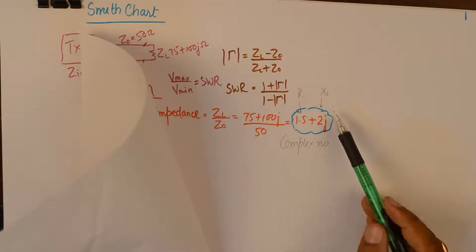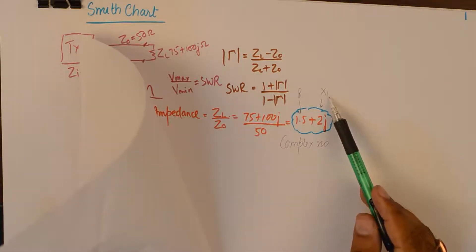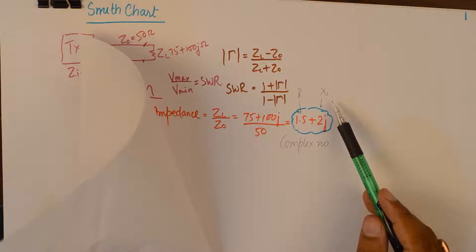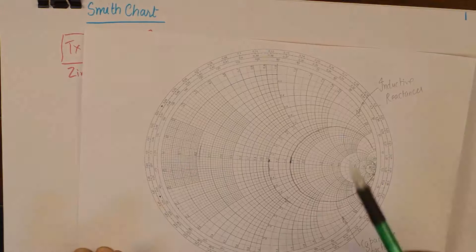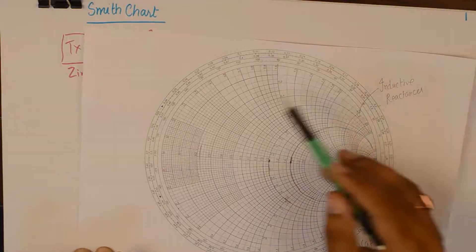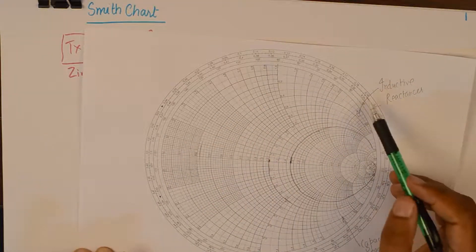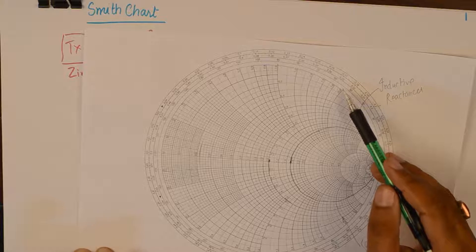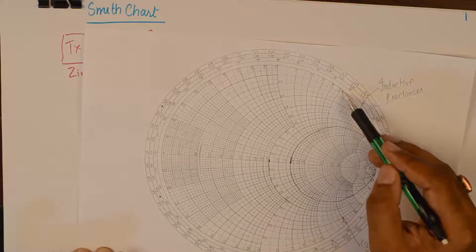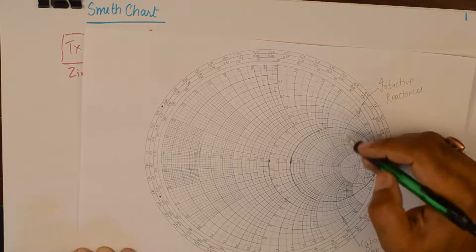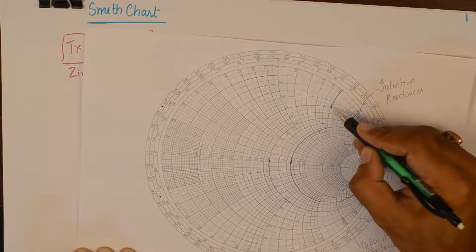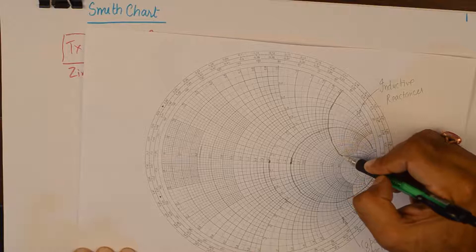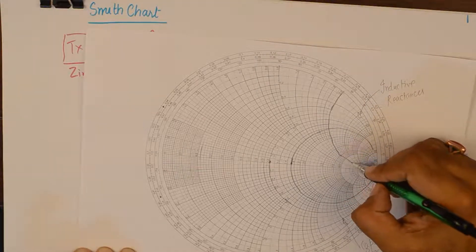Now, we need to plot XL, the reactance, which is positive by the way. So, we will look out for the value of 2 on the upper semicircle and here we find 2. So, we will highlight this semicircle 2 like this.